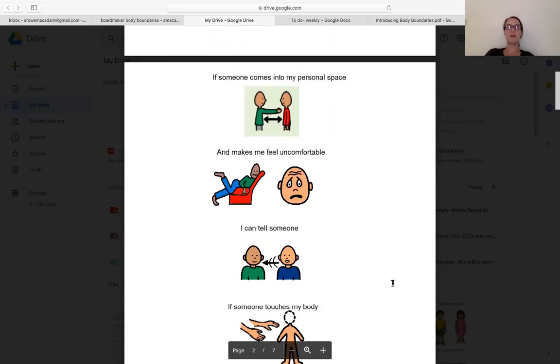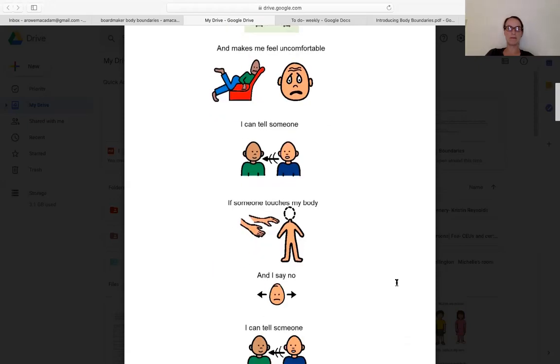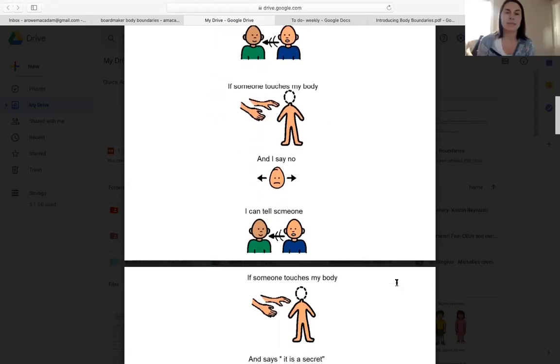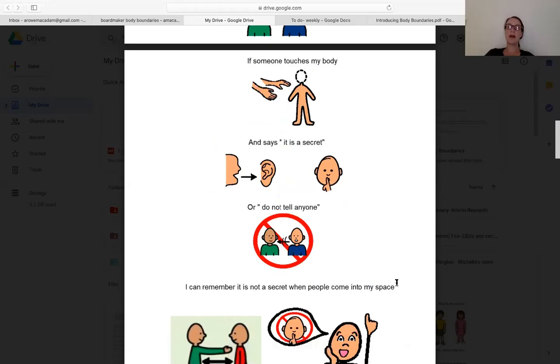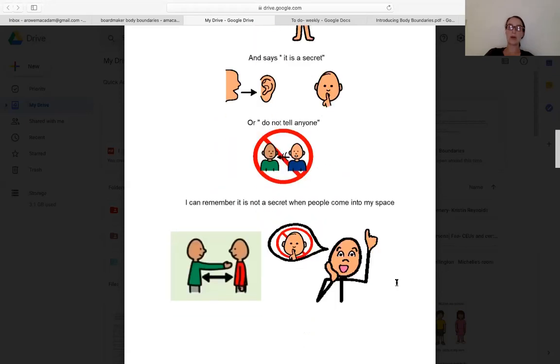If someone comes into my personal space and makes me feel uncomfortable, I can tell someone. If someone touches my body and I say no, I can tell someone. If someone touches my body and says it's a secret or do not tell anyone, I can remember that it's not a secret when people come into my space.